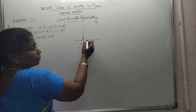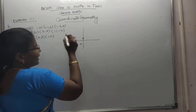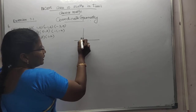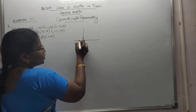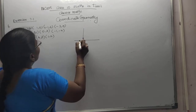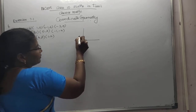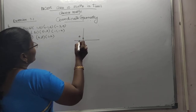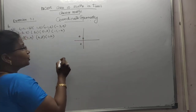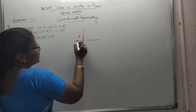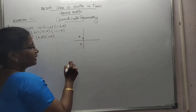Point C is (minus 1, 2), so minus 1, 2. 2 is here. Minus 1, 2. Next point D is (minus 3, 0). Minus 3, 0. Understand?